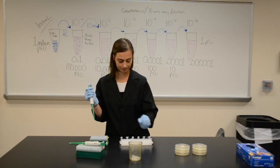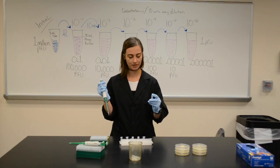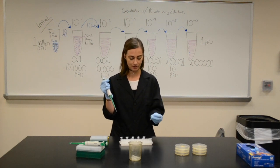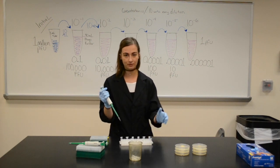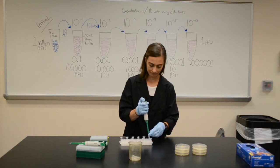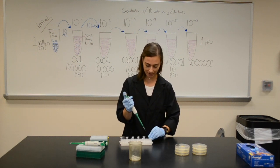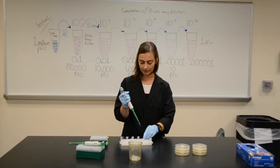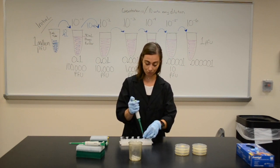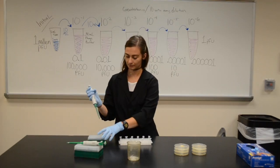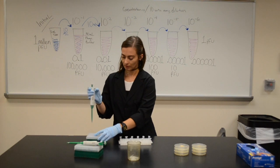I'm going to take my tube that I just put 10 microliters into of my sample, that has 90 microliters of phage buffer in it already, and give it a little shake because I want to get everything dispersed. And I'm going to take 10 microliters of this from 10 to the minus 1 and move it into the next tube.